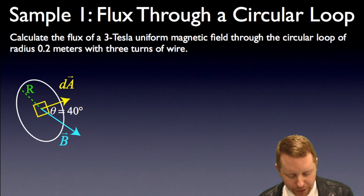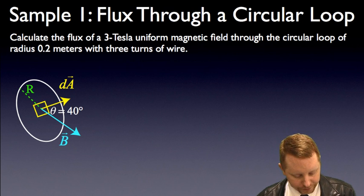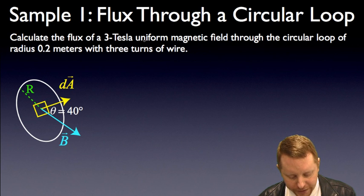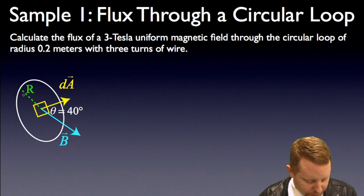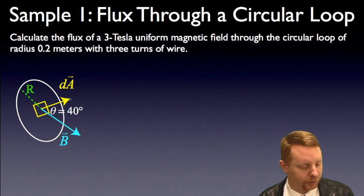Let's take a look at our first sample problem, flux through a circular loop. Calculate the flux of a three Tesla uniform magnetic field through a circular loop of radius 0.2 meters with three turns of wire. So we've got one, two, three turns of wire there in a loop.